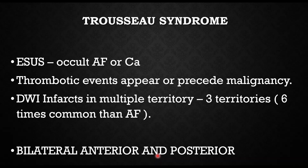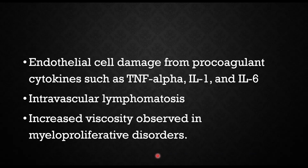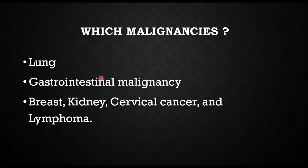Why is there a hypercoagulable state in malignancy? There are several reasons: activation of cell adhesion molecules, specifically by mucin from adenocarcinomas; release of tissue factors by cancer cells; endothelial cell damage from procoagulant cytokines; intravascular lymphomatosis; and increased viscosity especially in myeloproliferative disorders. The most common malignancies associated with stroke are lung and GI malignancies, with reports also involving breast, renal, cervical cancers, and lymphoma.